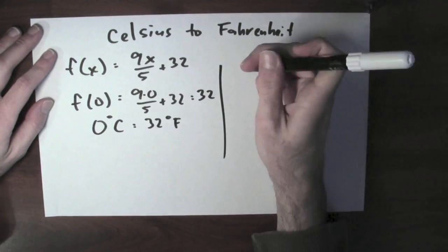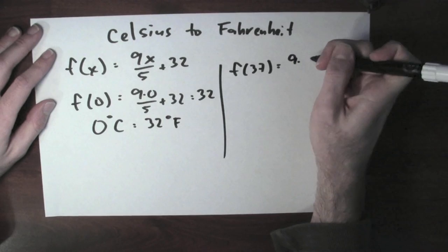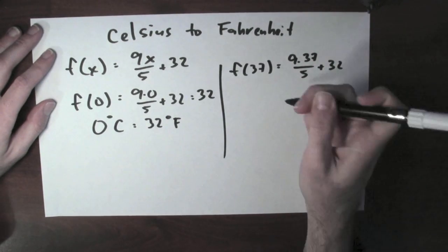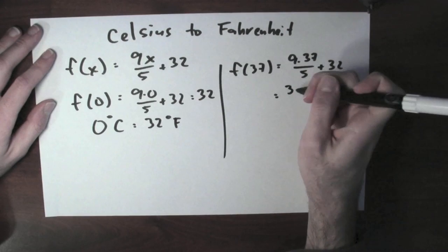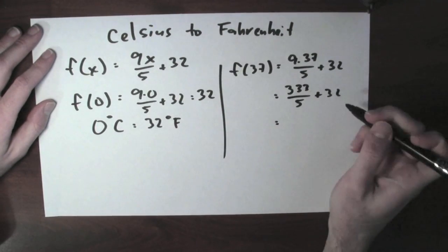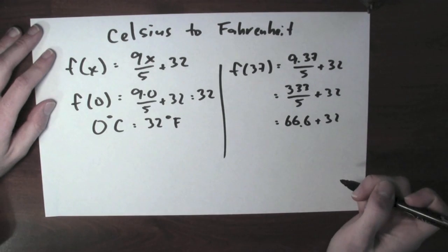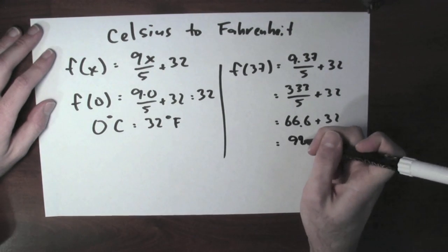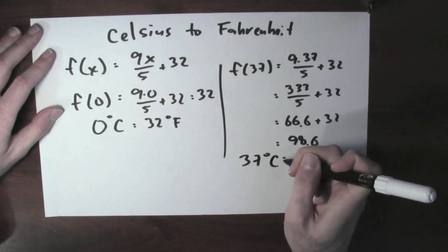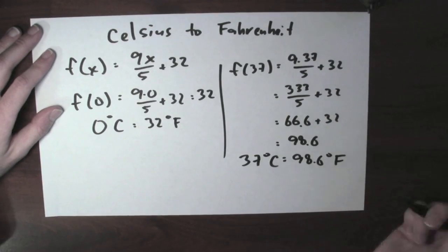Here's another example. What's f of 37? Well, that's 9 times 37 over 5 plus 32. 9 times 37 is 333 over 5 plus 32. 333 over 5 is 66.6, so 66.6 plus 32 is 98.6. And indeed, 37 degrees Celsius is the same thing as 98.6 degrees Fahrenheit.